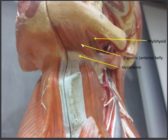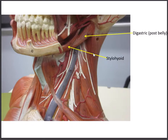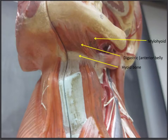We can see the digastric muscle — the anterior belly and the posterior belly — along with the stylohyoid. All four of these suprahyoid muscles are synergistic in raising the hyoid bone. They all attach to the upper part of the hyoid and help to elevate it. Here's the hyoid bone as well.